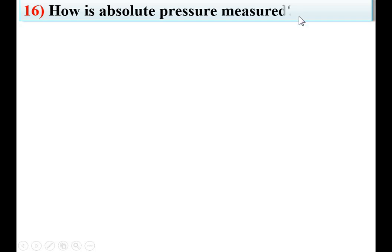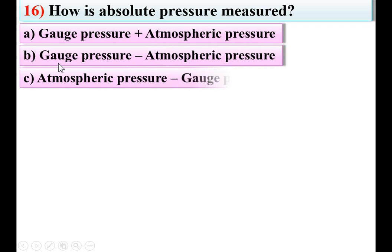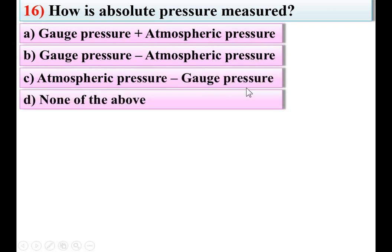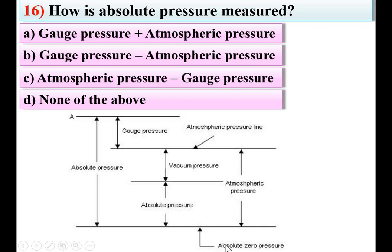Next: how is absolute pressure measured? Options: gauge pressure plus atmospheric pressure, gauge pressure minus atmospheric pressure, atmospheric pressure minus gauge pressure, none of the above. From the pressure diagram, the zero pressure line is at the bottom and the atmospheric pressure line is above it. Pressure measured from atmospheric is gauge pressure; measured from zero pressure is absolute pressure. Therefore absolute pressure equals atmospheric pressure plus gauge pressure. A is the right answer.